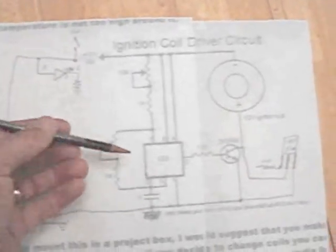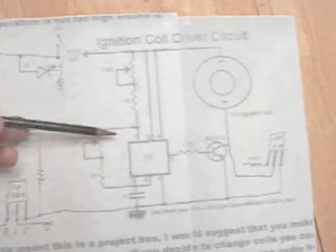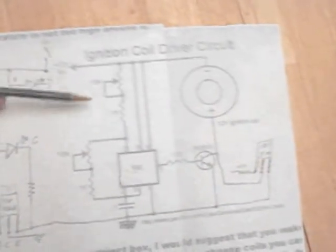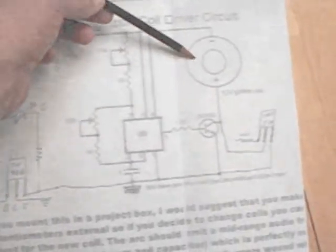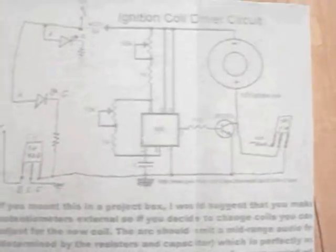This is a traditional 555 timer circuit. We have our adjustments here, the variable resistors. This is the coil. And power comes in up here.